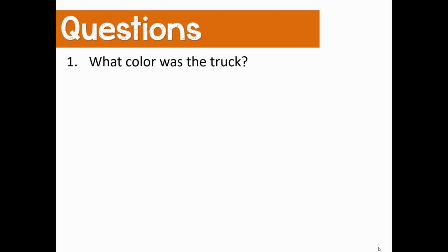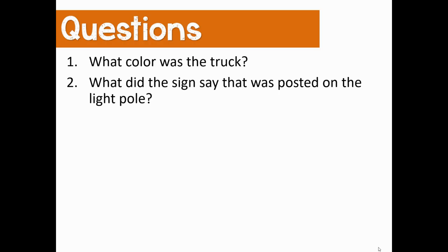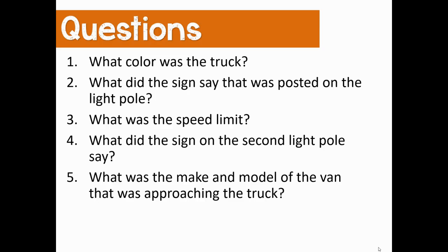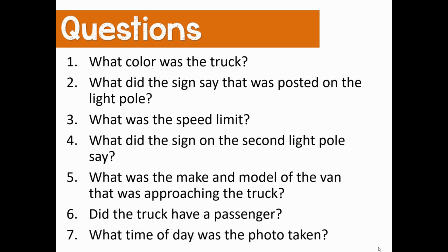Number one: what color was the truck in the picture? Number two: there were two light poles — what did the sign say that was posted on the first light pole? Number three: there was a speed limit sign — do you remember what the speed limit was? Number four: what did the sign on the second light pole say? Number five: what's the make and model of the van that was approaching the truck? Number six: did the truck have a passenger? Number seven: what time of day do you think this photo was taken?